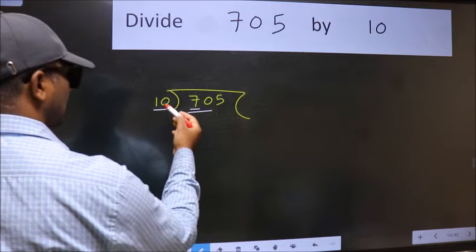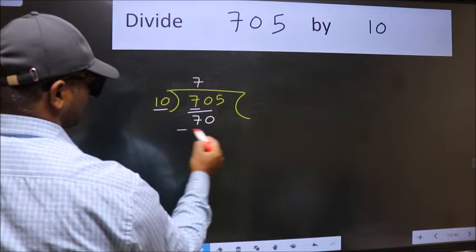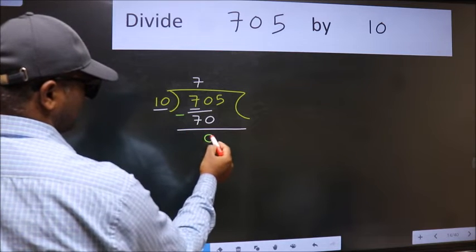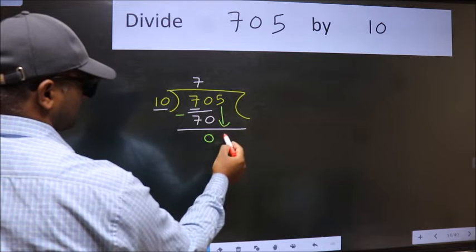When do we get 70 in 10 table? 10 7s, 70. Now we should subtract. We get 0. After this, bring down the beside number. So 5 down.